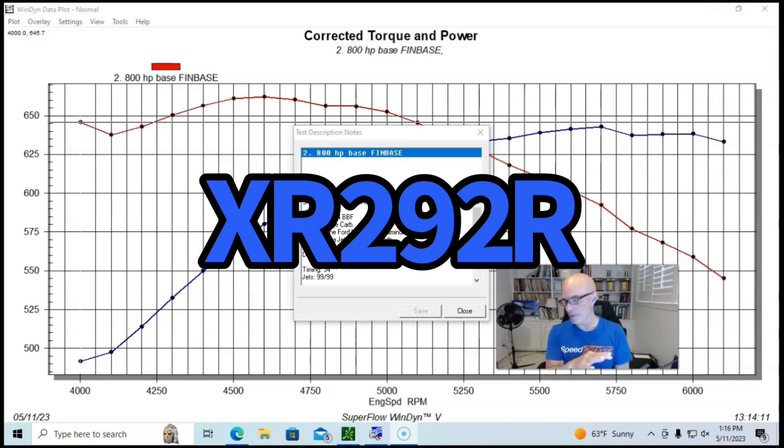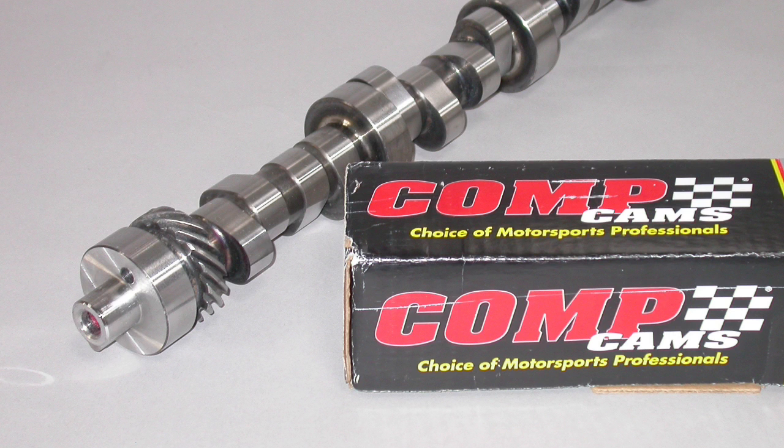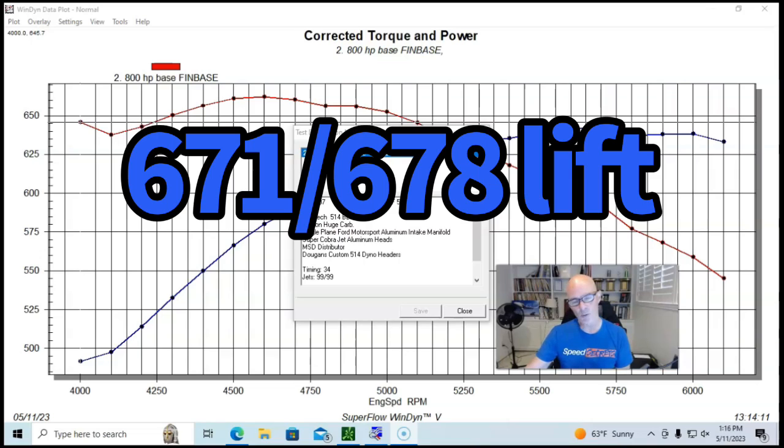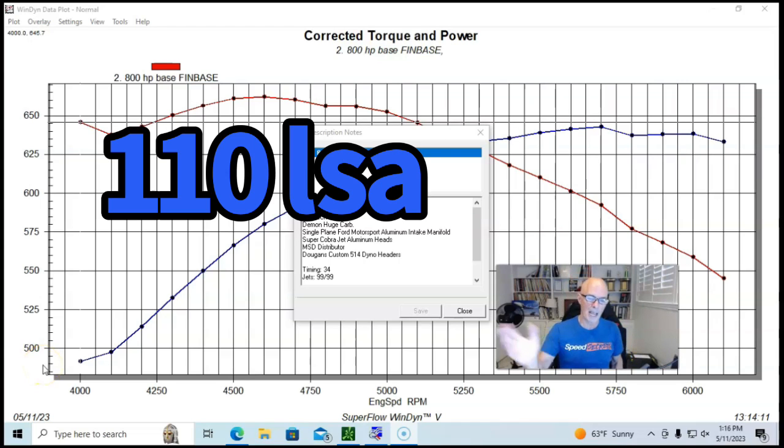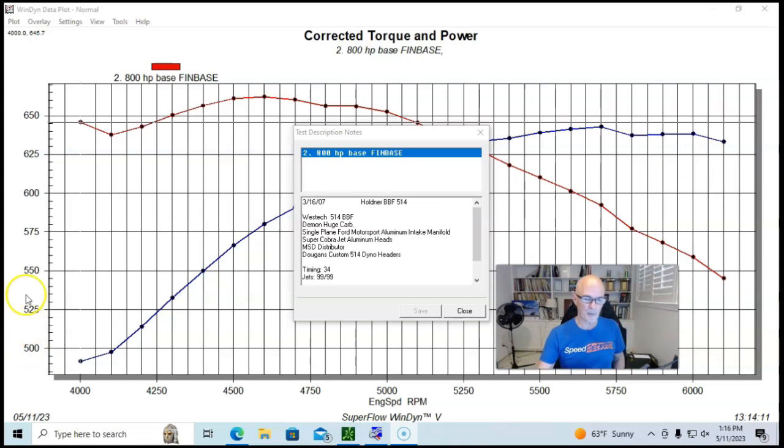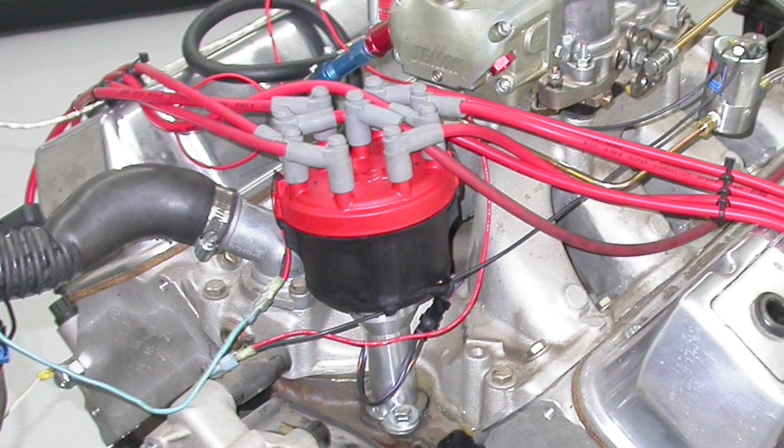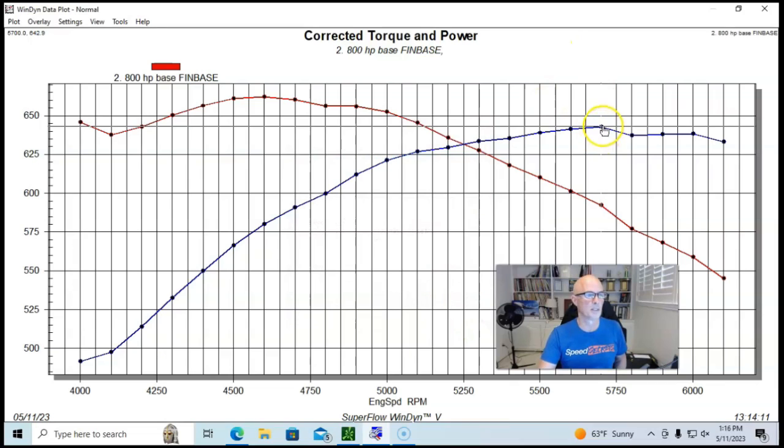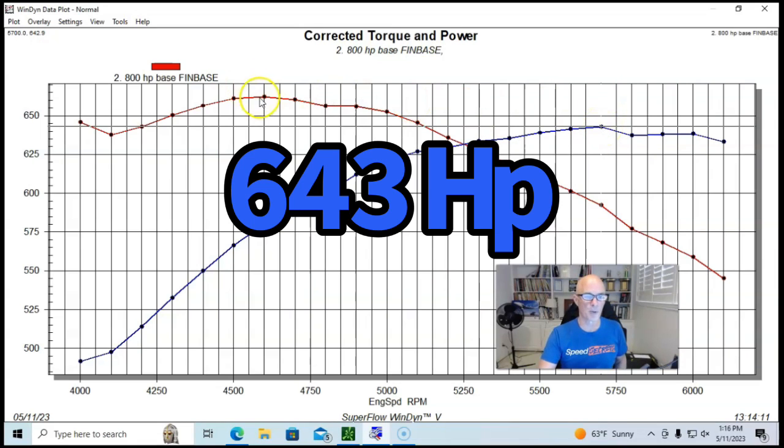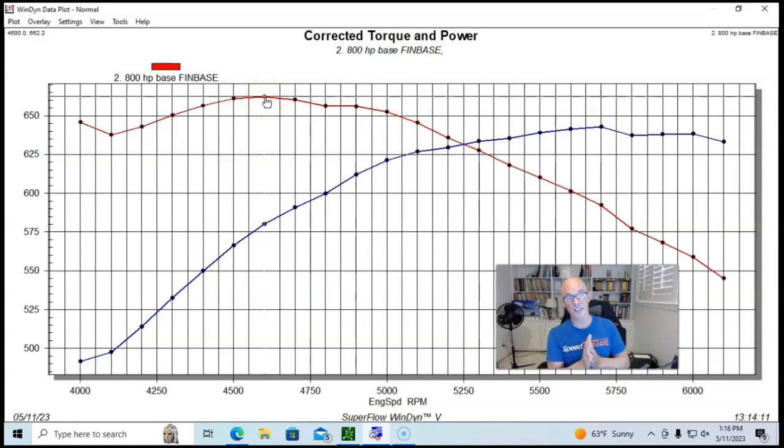We had a 1050 Mighty Demon carburetor on there. It had Super Cobra Jet aluminum heads on at this time. This thing had an Extreme Energy 292 solid roller camshaft, which was a 671, 678 lift, 254, 260 degree duration split on a 110 degree lobe separation angle. We had big black headers on it, an MSD distributor. And then run in this manner, our 514 produced 643 horsepower and even more torque, 662 foot pounds of torque.